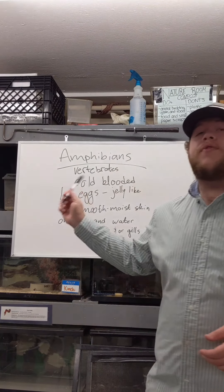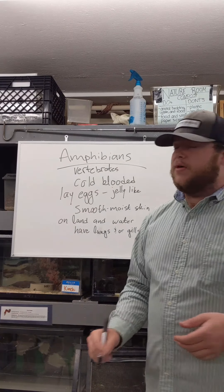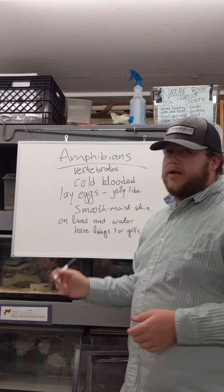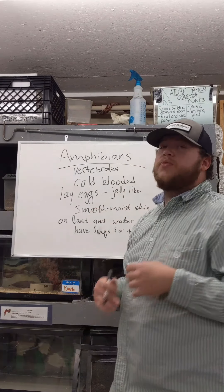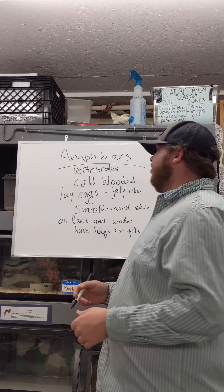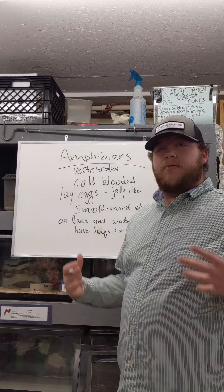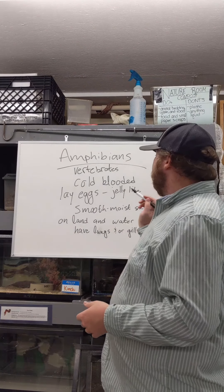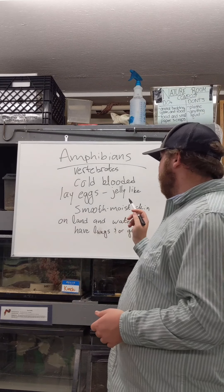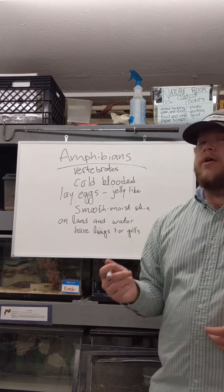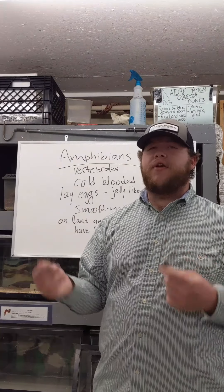As a review of amphibians: they are vertebrates, meaning they have backbones. They are cold-blooded, which means they can't regulate their body temperature. They lay jelly-like eggs — not like chicken eggs. They have smooth, moist skin which they don't shed; they grow with it. You can find them on land and in water. And they have lungs and/or gills depending on which stage of their life they're at.